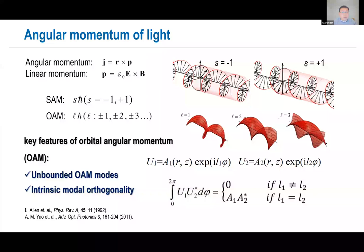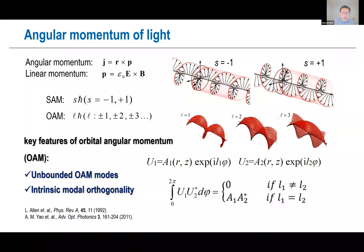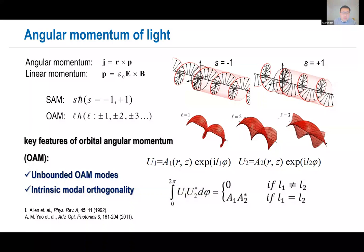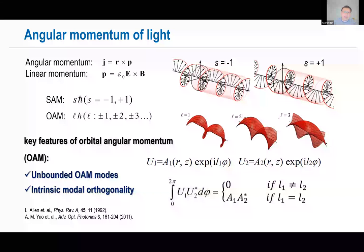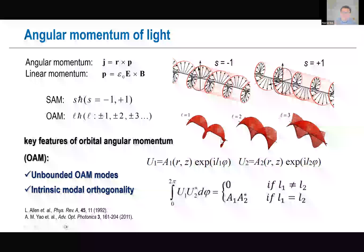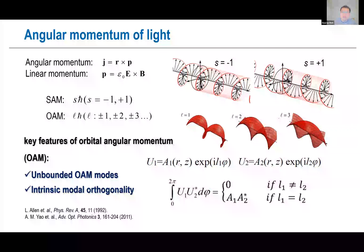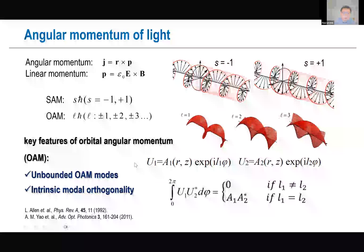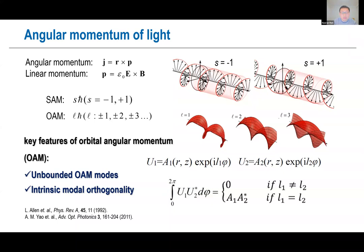A one-slide introduction to the angular momentum of light: in the paraxial limit you can separate it into the spin component and orbital component in free space. Spin angular momentum is carried by circular polarization with different handedness — this is carried by the polarization degree of freedom. Orbital angular momentum is a kind of twisted light, where the topological charge, which is the OAM order, can go to infinite in principle, even though it's practically limited by the aperture size of your optics. All the modes are orthogonal to each other, which gives the advantage to use these structured light modes to encode information.